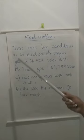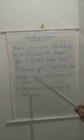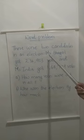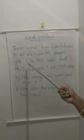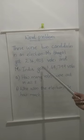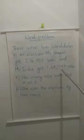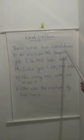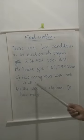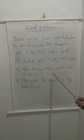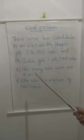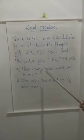By reading the question, the number of votes for two people is given. The first person is Mr. Bhagat — how many votes did he get? 2,34,903. And Miss India got 1,68,799. This is the given information. What do we have to find? The first question: how many votes were cast in all? That means we have to find the total. So how will you find the total?